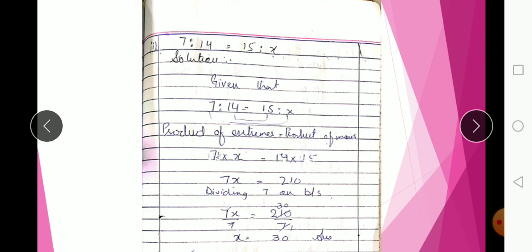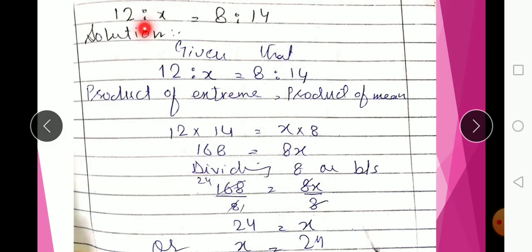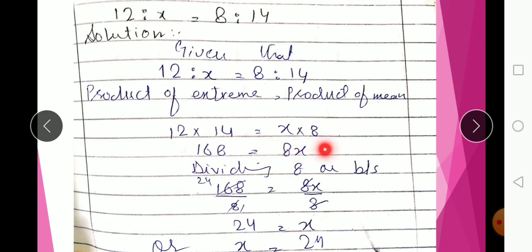This is question number 3. The unknown value X appears in a different position. Here: 12 : x = 8 : 14. Using the product of extremes equals product of means: 12 × 14 = x × 8, so 168 = 8x. Dividing 8 on both sides, x = 21. The transcript states x = 24.